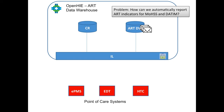Once we have the ART data warehouse, we can utilize it not just for point-of-care applications but also for reporting ART indicators. There is a DHIS2 system for the Ministry of Health as well as for PEPFAR's DATIM system. We can aggregate the clinical information from the ART data warehouse and report to DHIS2 using the ADX message format based on the indicators required by the MOH and the DATIM system. We don't have to go back to the EPMS, EDT, and HTC systems to generate these indicators, which will really reduce the amount of time and effort required to report.